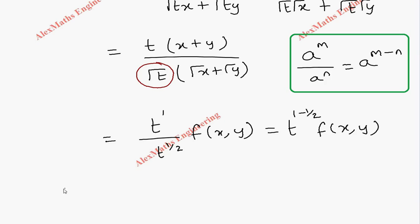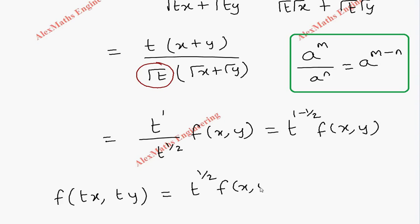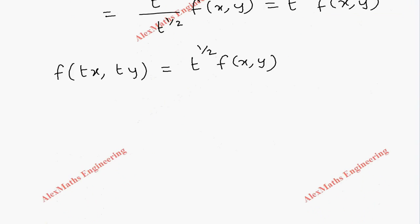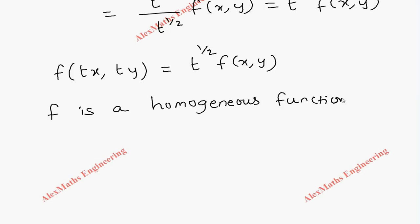So f(tx, ty) = t^(1/2) · f(x, y). From this it is clear that f is a homogeneous function of degree 1/2.